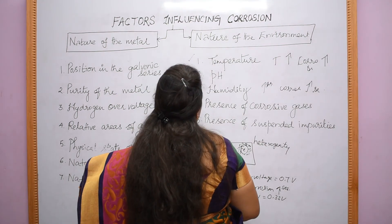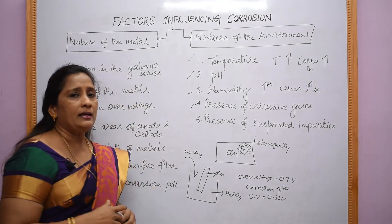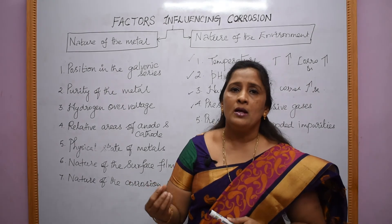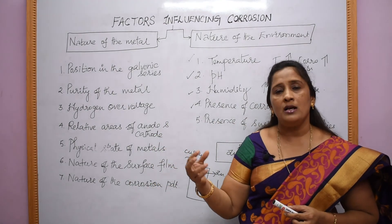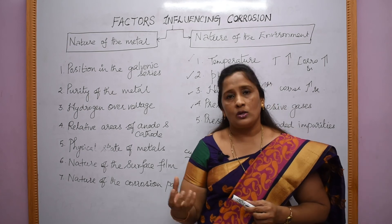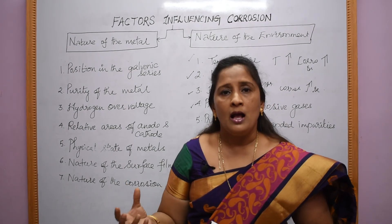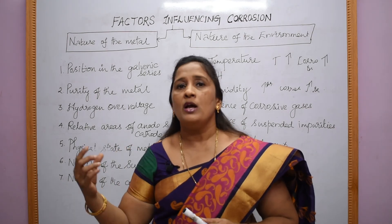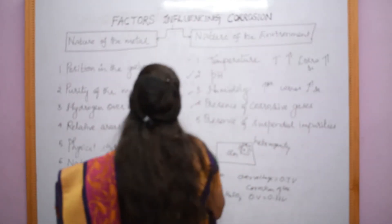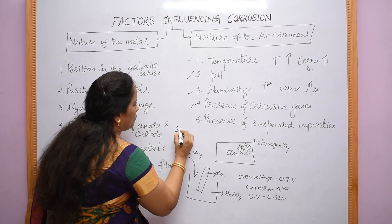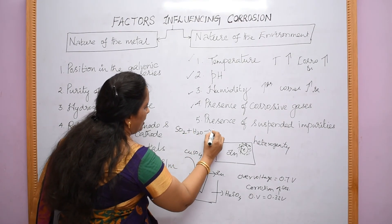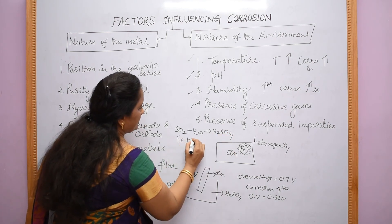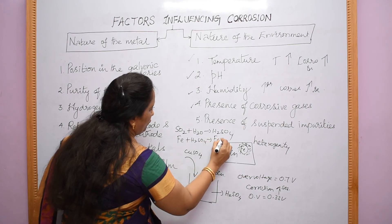The fourth environmental factor is the presence of corrosive gases, such as CO₂ and SO₂, and fumes like HCl. These gases become a solvent for oxygen and form an electrolyte, driving the corrosion process. For example, SO₂ reacts with water to give H₂SO₄, and Fe reacting with H₂SO₄ gives FeSO₄.